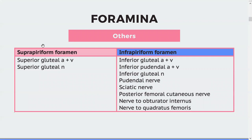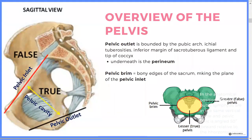I remember having a question on what structures would go through the suprapiriform foramen. It's quite easy to remember: you've got the superior gluteal nerve in the suprapiriform, and then everything else goes through the infrapiriform foramen. That's pretty much how you can remember that.